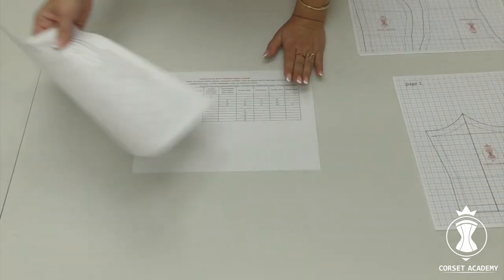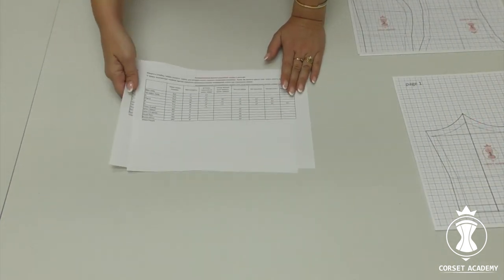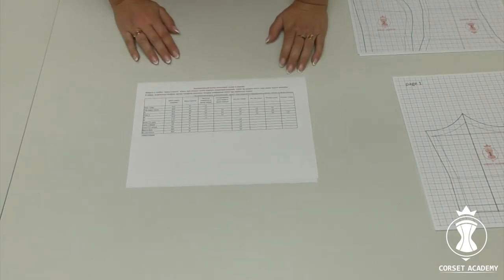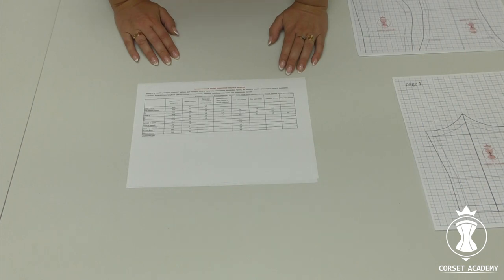Thus, I used the second table where I specified the measurements of an imaginary client to demonstrate the calculation when the measurements differ significantly from the measurements of a standard pattern. I selected an example when a bust circumference of a client is 100 cm.